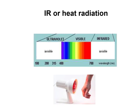IR radiation is emitted from the earth's surface. Infrared radiation, also called IR radiation or heat radiation, is part of the electromagnetic spectrum. Its wavelength is above the visible region, with lower energy and frequency. An example is the infrared lamp used in physiotherapy to relieve pain.